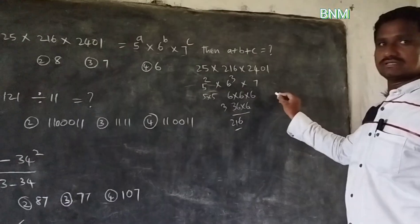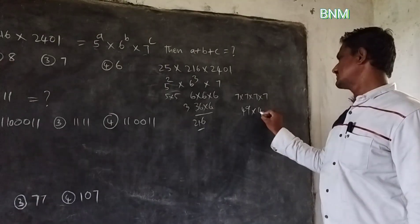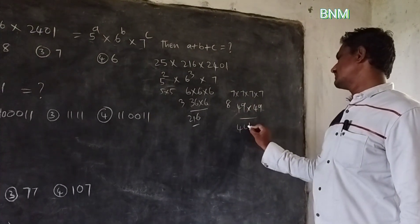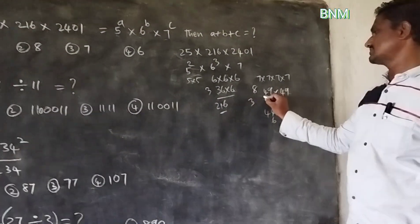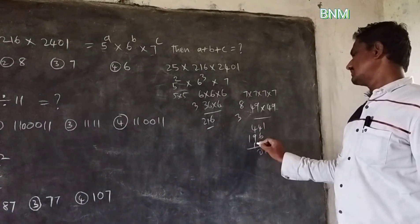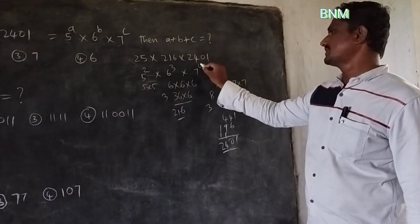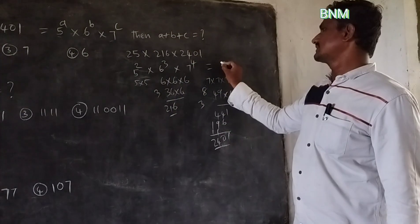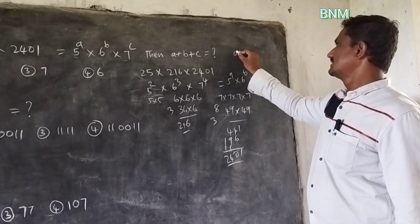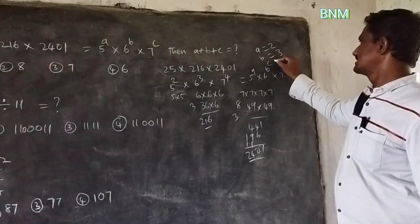And 7 to the power 4: 7 into 7 into 7 into 7 — 7 times 7 are 49, into 49. 9 times 9 are 81, carry 3; 4 times 4 are 16 plus 3 gives 19. 10 plus 4 is 14, plus 1 gives 2,401. So 7^4 equals 2,401. Therefore: 10 equals 5^a into 6^b into 7^c, giving a equals 2, b equals 3, c equals 4.